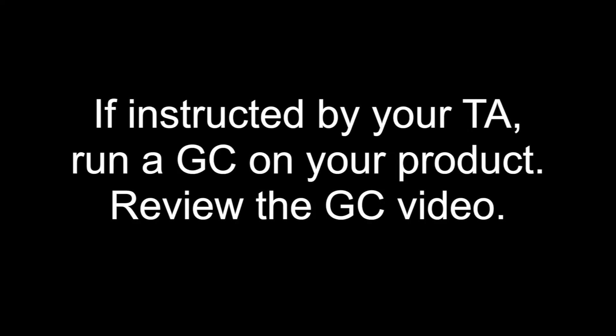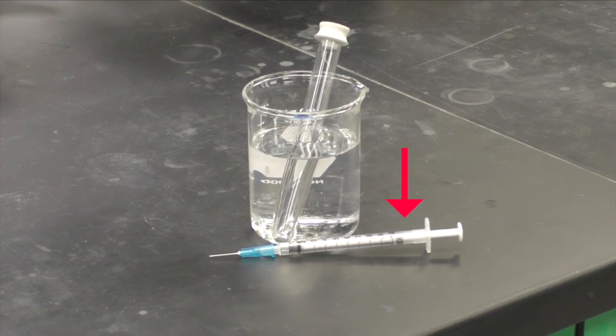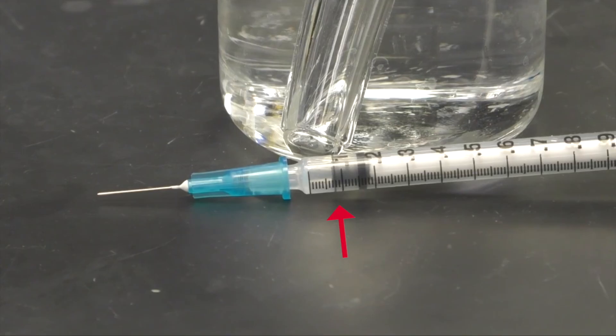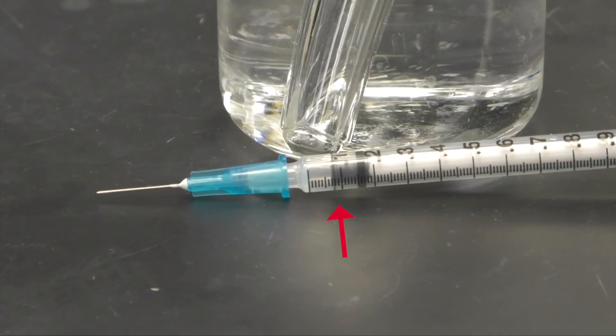If instructed by your TA, run a GC analysis on your product. Because it is a gas, you'll be using a different type of syringe than the one used for a liquid product. You'll insert the needle into the rubber septum and draw up 0.05 to 0.1 mils of gas for your injection.